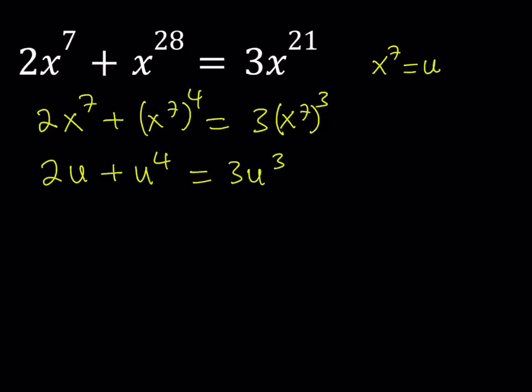Now, I'd like to put everything on the same side and make it a standard quartic. This became a quartic equation, which is obviously much easier to solve than an un-Vigintic. So we have u to the 4th power minus 3u cubed plus 2u is equal to 0. Now we're going to be looking for two different kinds of things here: real solutions and complex solutions.